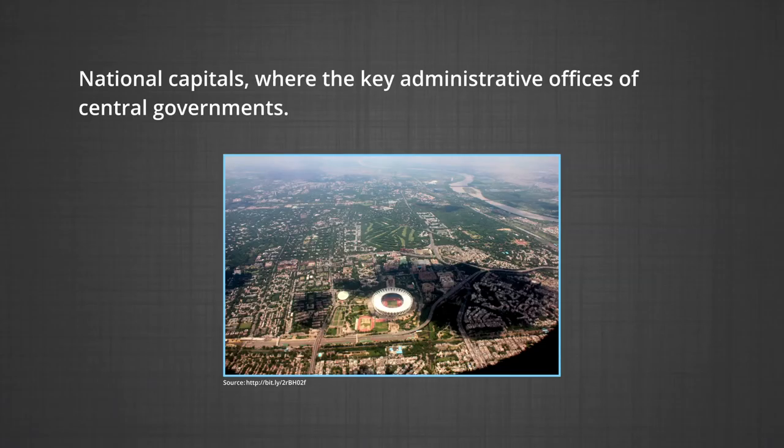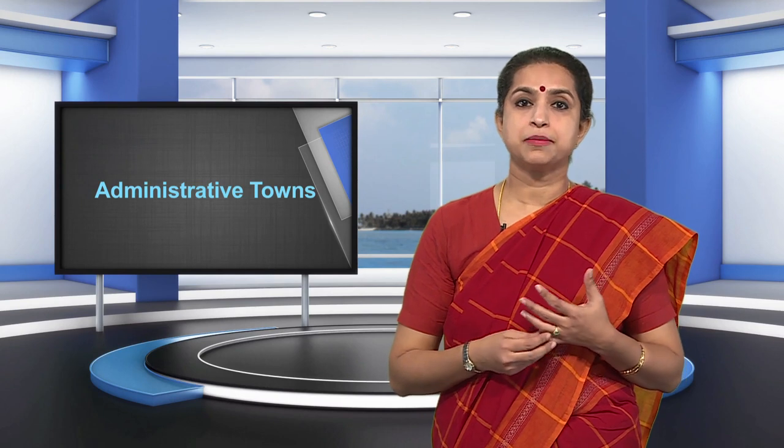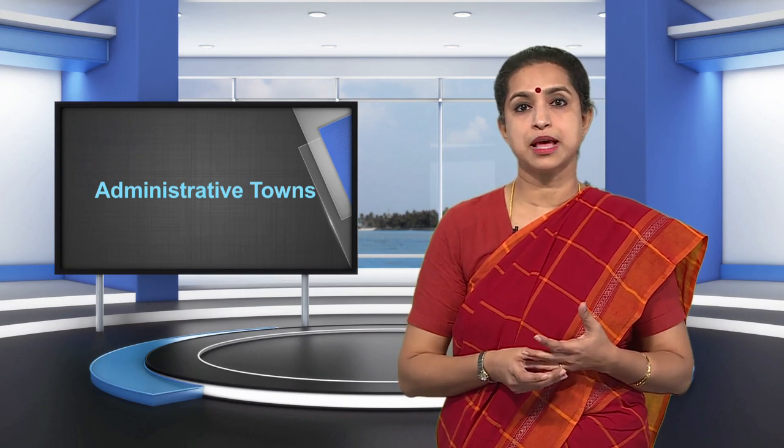Towns and cities are classified into the following categories. Administrative towns: National capitals where the key administrative offices of central government are located — such as New Delhi, Canberra, Beijing, Addis Ababa, Washington DC, and London — are called administrative towns. Provincial or sub-national towns can also have administrative functions; for example, Victoria in British Columbia, Albany in New York, and Chennai in Tamil Nadu.